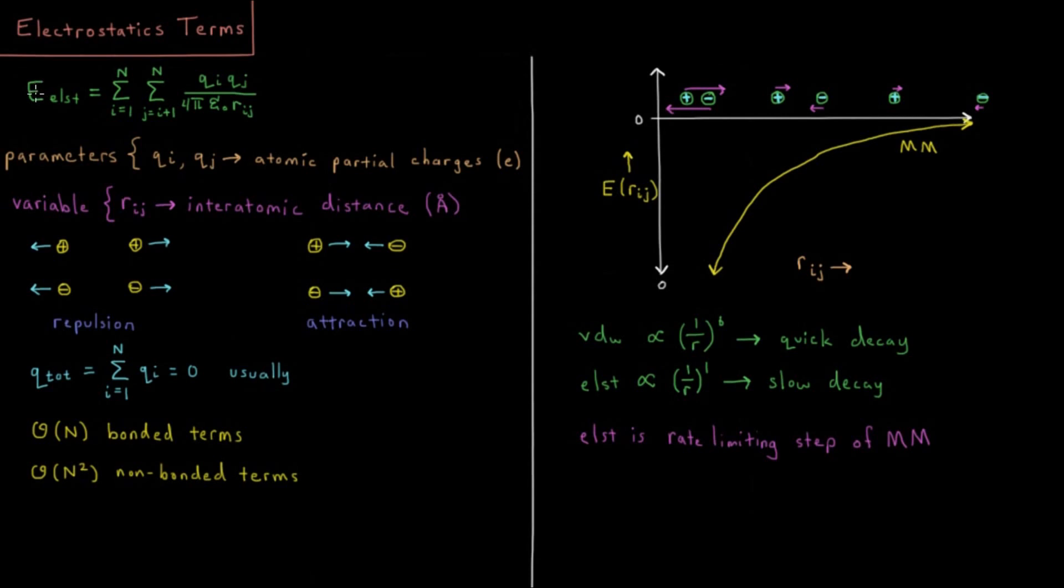This electrostatic energy is going to be a sum over all atoms, I equals 1 to N, and then another sum from J equals I plus 1 to N. So these two sums combined go over all unique pairs of atoms.